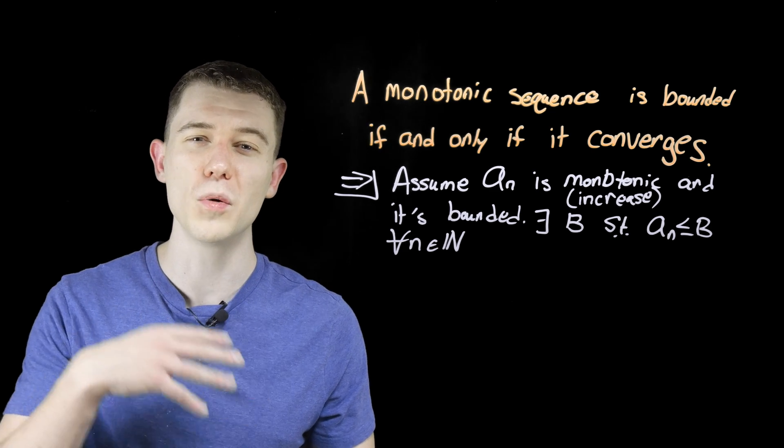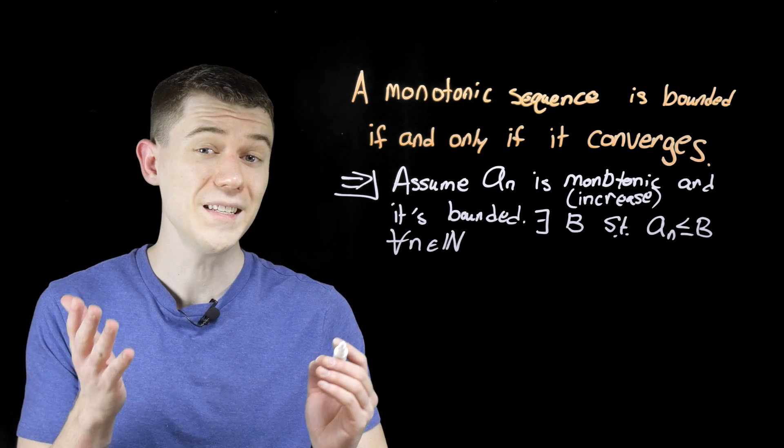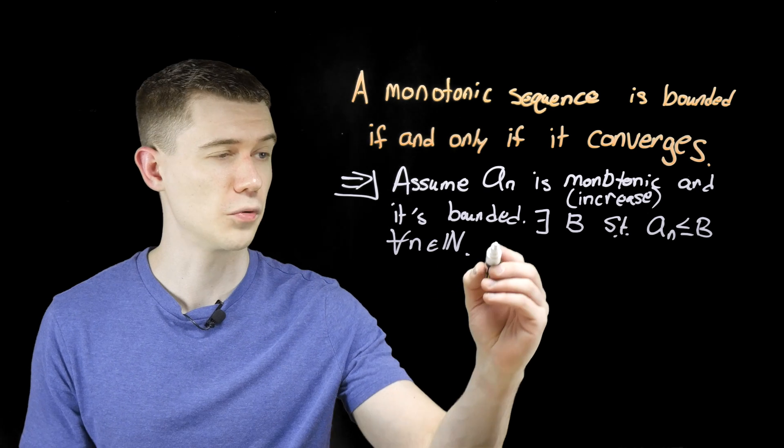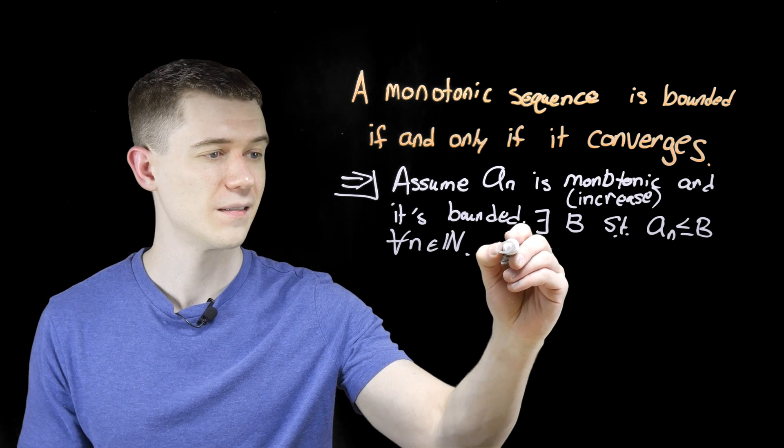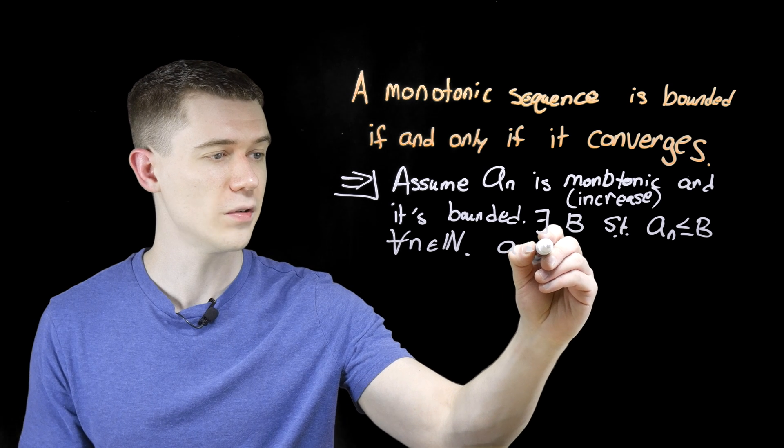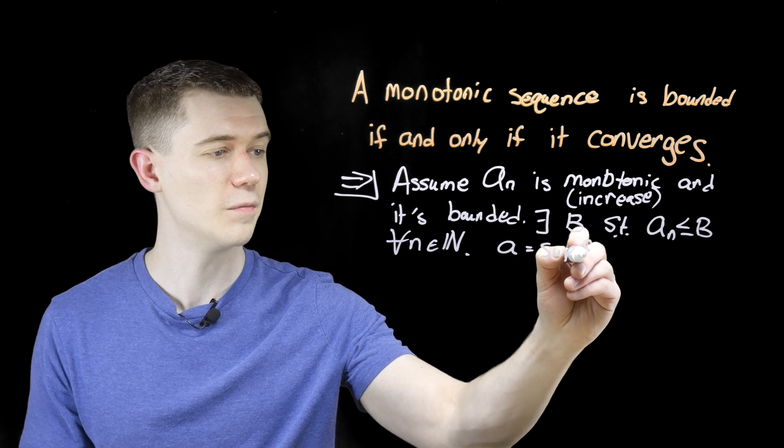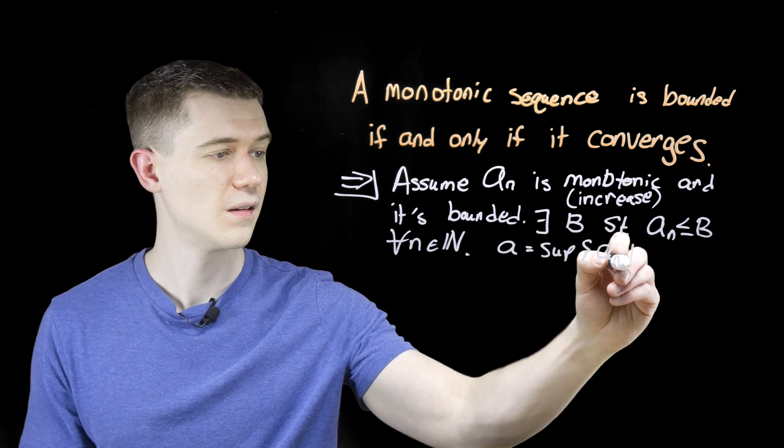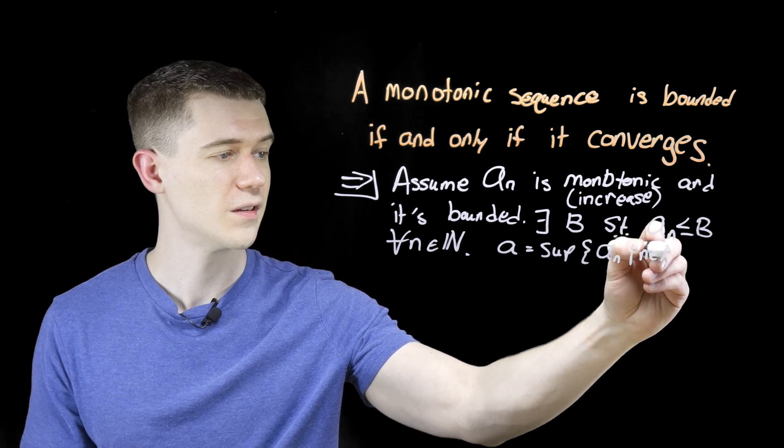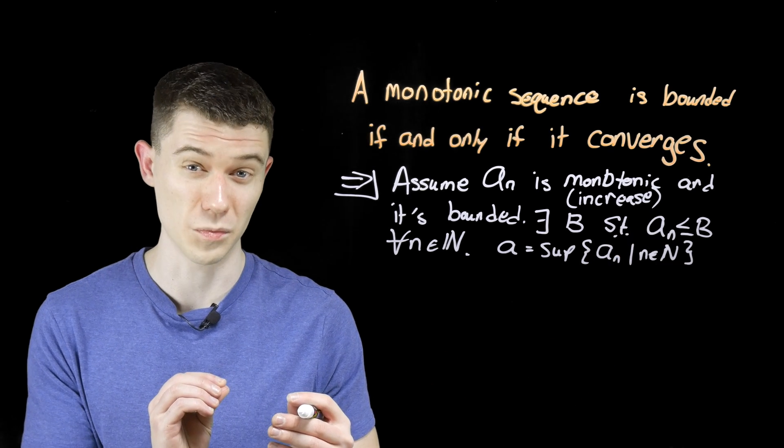We want to show it's convergent. Well since it's bounded above, there must be a supremum. Let's let little a here. This is going to be the supremum of my sequence for all n in the naturals. And since there is such a supremum,